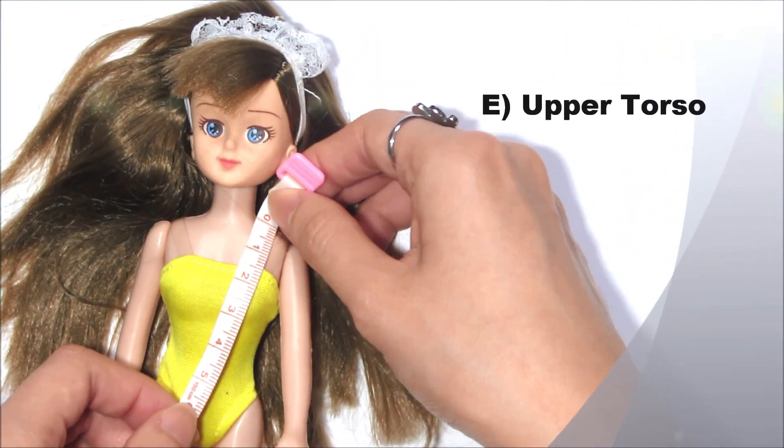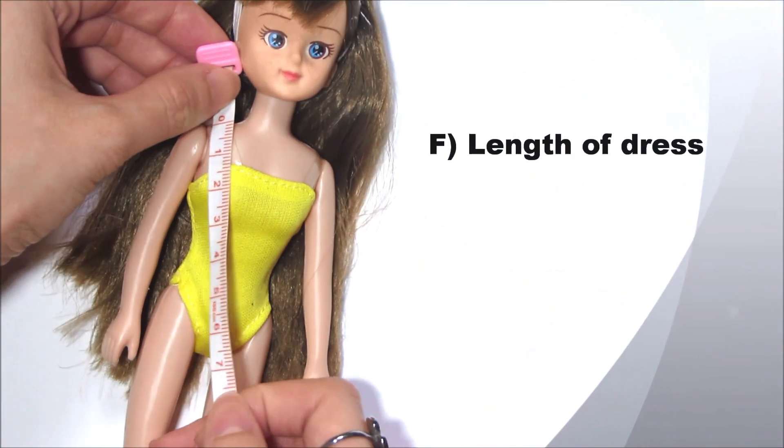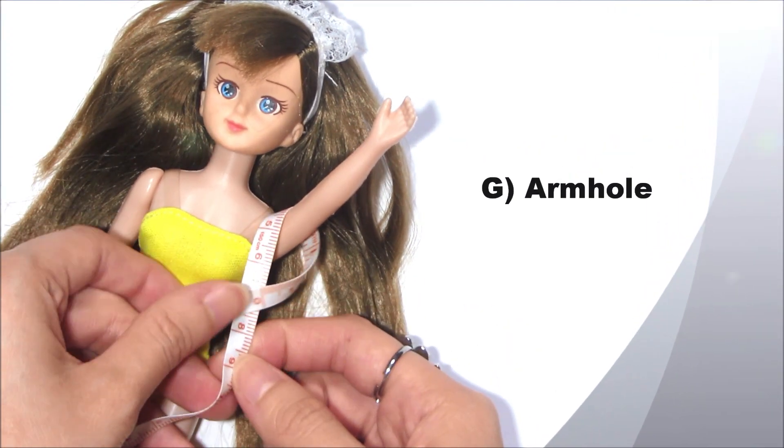For your upper torso, you should measure from the tip of your shoulder to your navel button. And for your length of dress, measure from the shoulder to the middle point at the lower end.